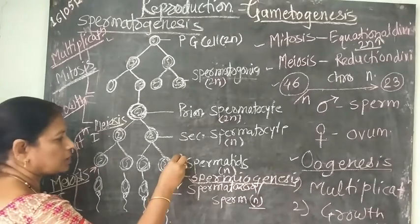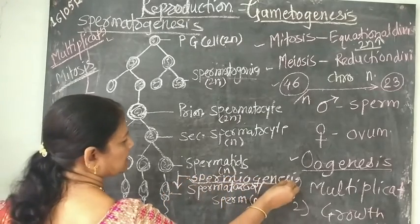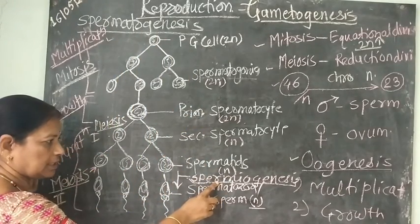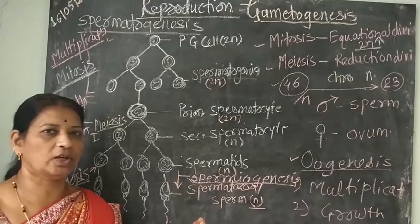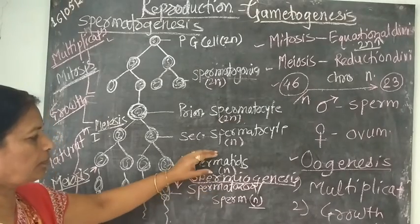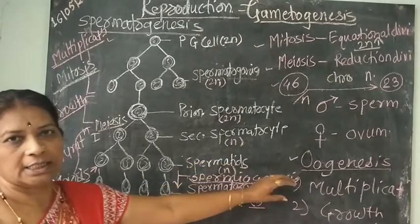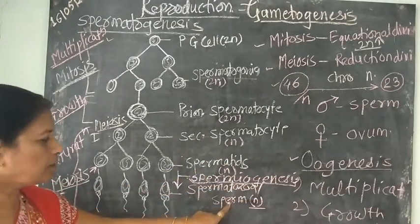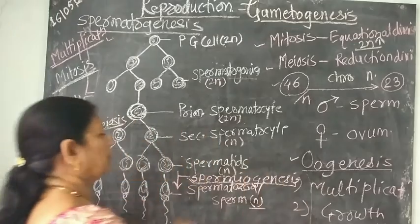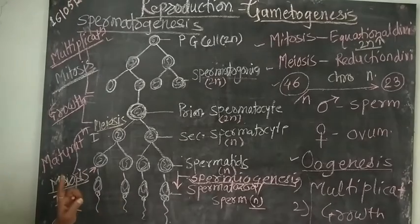An important term to remember: the conversion of spermatids into sperms is known as spermiogenesis. There is always confusion between spermatogenesis and spermiogenesis. Remember, for board exams there is always a question about which process converts spermatids into sperms — that is spermiogenesis. Both spermatids and sperms are haploid. Thus through these three phases the process of spermatogenesis is completed.